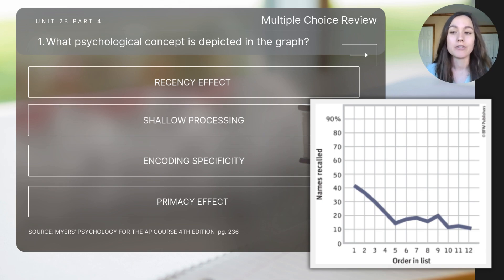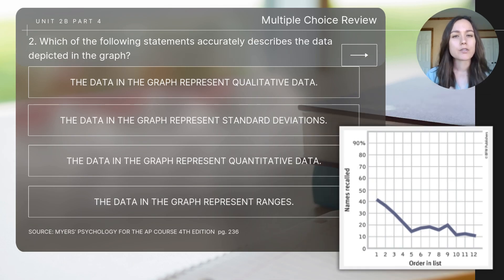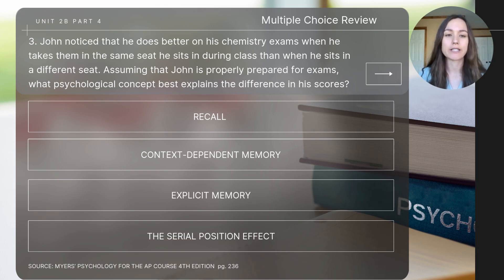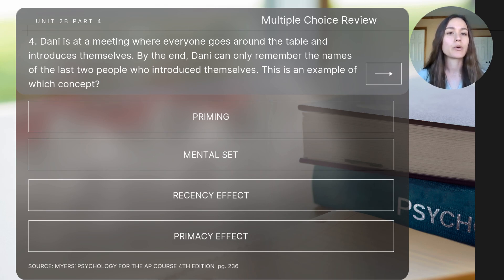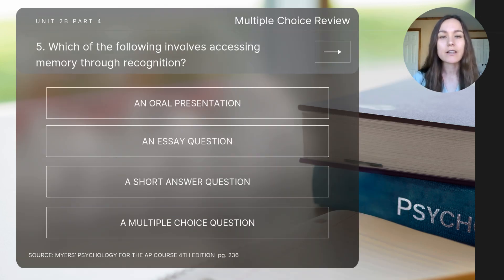Drawing on what you know about data interpretation and research methods, let's answer some review questions using the same graph. Question one: what psychological concept is depicted in this graph? Question two: which statement accurately describes the data shown? Question three: John does better on chemistry exams when sitting in the same seat as during class — what concept best explains this? Question four: Danny can only remember the last two people who introduced themselves at a meeting — which concept does this illustrate? Question five: which of the following involves accessing memory through recognition?